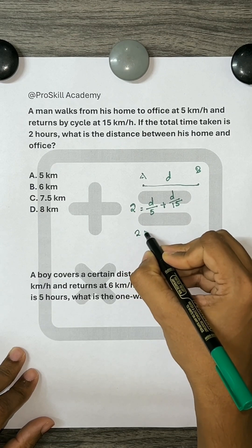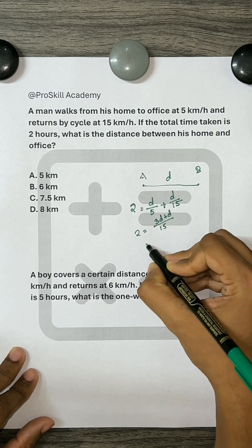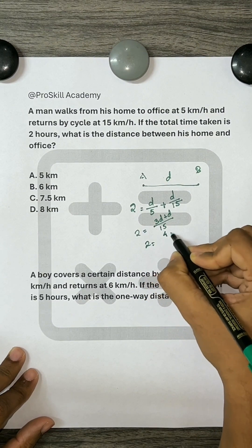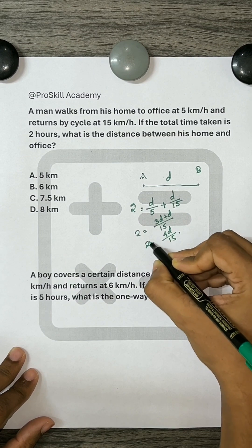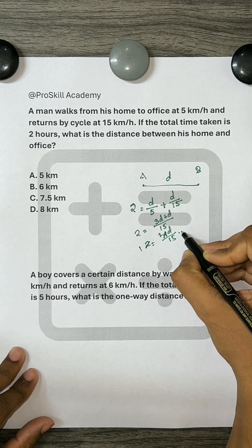So, this gives us 2 equals D/5 plus D/15, which equals (3D + D) divided by 15, and 2 equals 4D divided by 15. Cancelling 2 and 4, we get 1 equals 2D divided by 15.